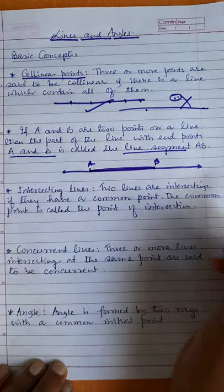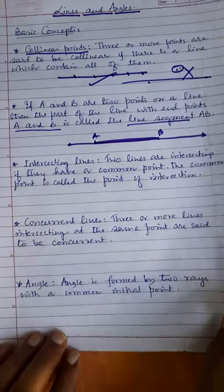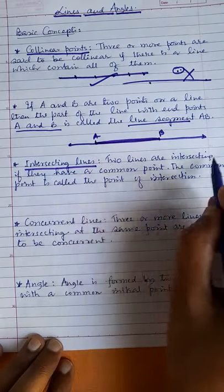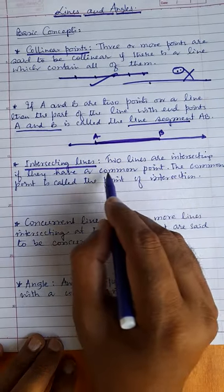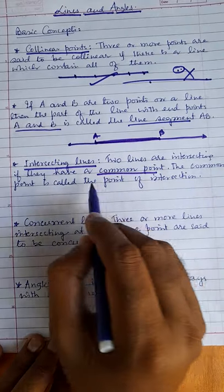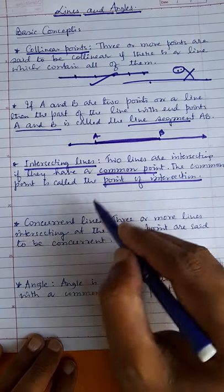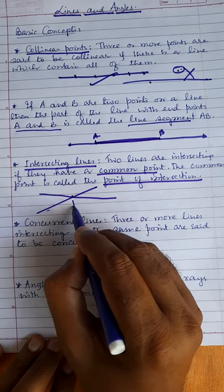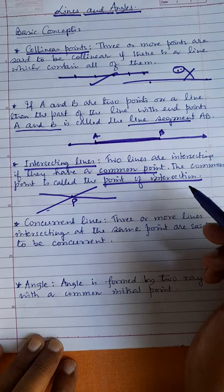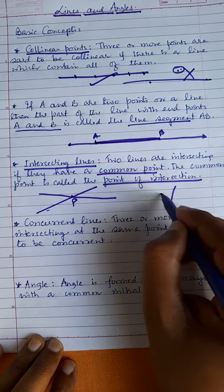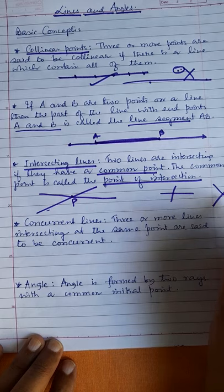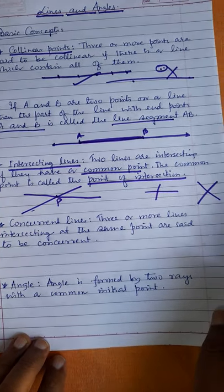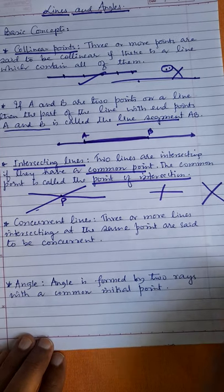Next is intersecting lines. Two lines are intersecting if they have a common point, and that common point is called the point of intersection. Two lines are there — this is one line, this is another line, and they have a common point P. P is called the point of intersection.